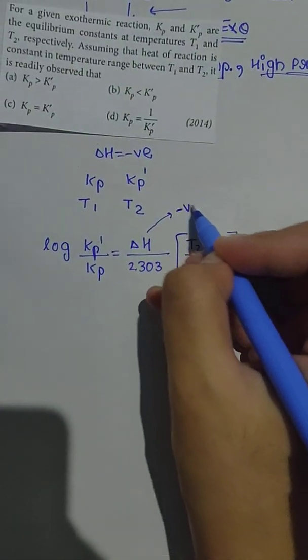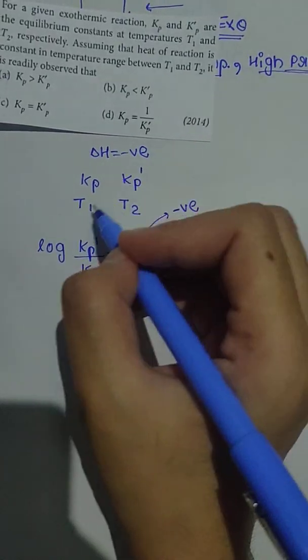Now, delta H is negative, this value is negative. Heat is released, heat is released...